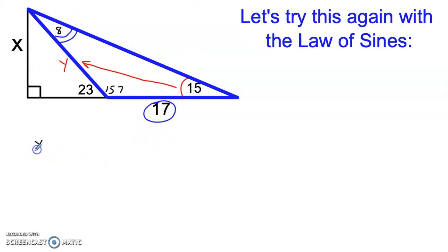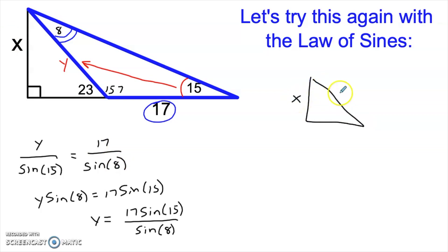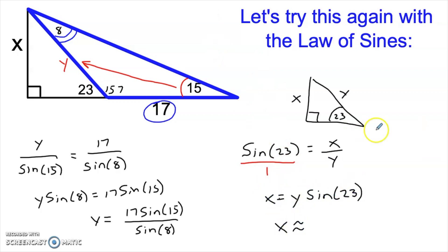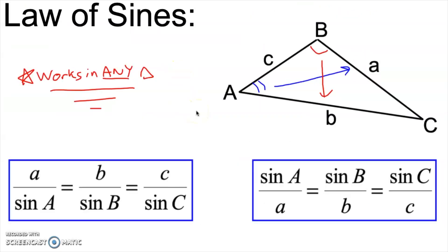Once we know that angle is 8, we can use the law of sines to find y: y over the sine of 15 equals 17 over the sine of 8. Cross multiplying gives y times the sine of 8 equals 17 times the sine of 15, so y equals 17 times the sine of 15 divided by the sine of 8. I'm not going to type that into my calculator yet because I'm going to use y in the right triangle. What I really want is x. In the little right triangle, the sine of 23 equals x over y, so x equals y times the sine of 23. Substituting the full expression for y and typing into the calculator gives approximately 31.614 for y, and then x is approximately 12.353.